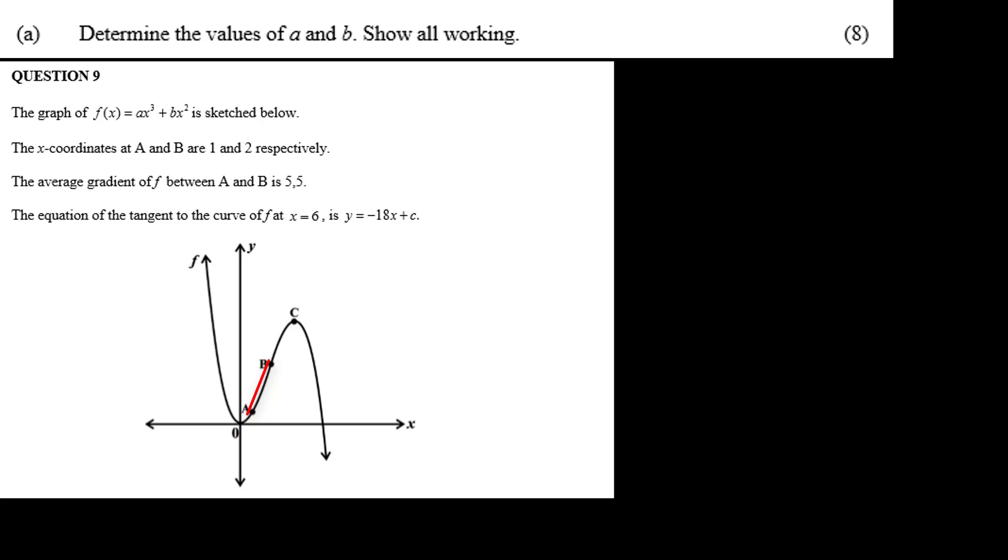If we get one of these points, then we get both of them. And we know that the slope of the curve at x equals 6 is minus 18.